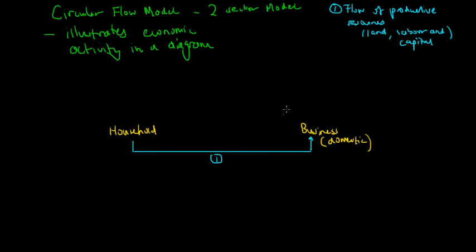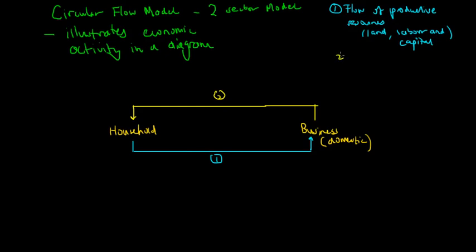In the market economy, businesses have to buy this land, labour and capital. So flow two naturally becomes the incomes paid to these households — this is the flow of incomes. When the businesses purchase the land, labour and capital from households, they must actually pay the households money. That's how the market economy works — they have to pay money to get something.